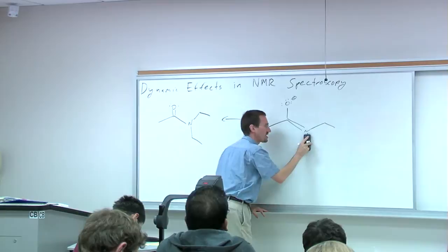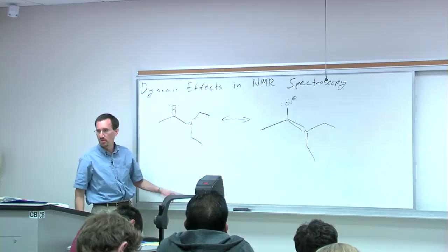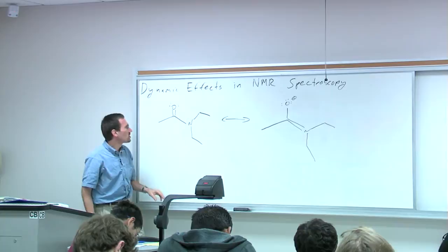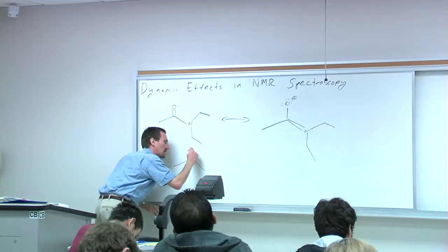The bond character is somewhere between that of a single bond and that of a double bond. In fact, it's about 30% double bond and 70% single bond that make up this picture. So as a result, you have slow rotation about this bond.